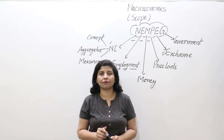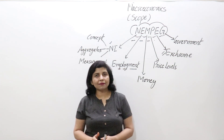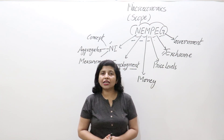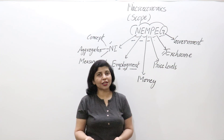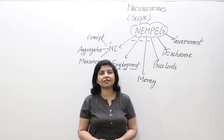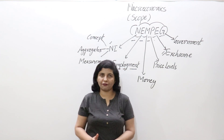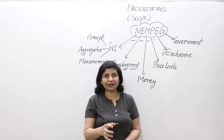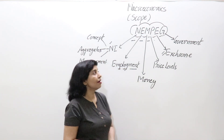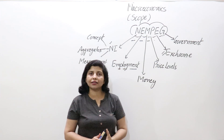First, national income. National income is the sum total of all factor incomes that accrue to the normal residents of a nation. Normal residents are people like you and me who are residing in any nation for one year or more, and whose economic interest lies in that nation.